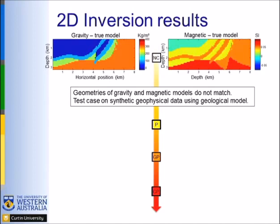The true models used to simulate the geophysics show density contrast varying between 0 and 300, and magnetic susceptibility ranging between 0 and 0.75. Notably, the geometries don't fit between gravity and magnetics — for example, there is no interface in the gravity contrast model where one appears in the magnetic susceptibility model, and the basin has mostly no density contrast while there is some magnetic susceptibility.